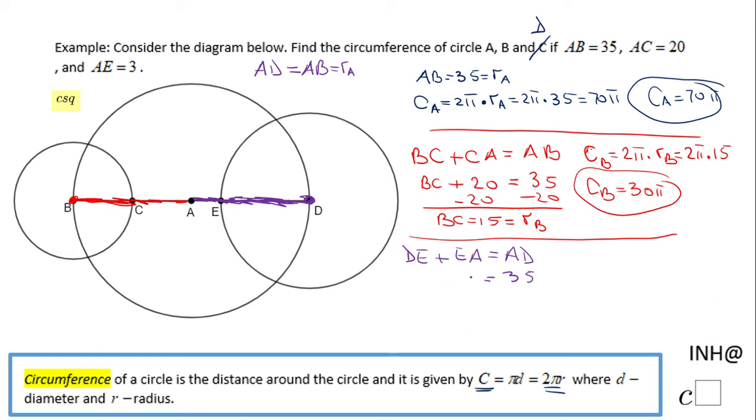If EA is 3, we can find DE just by subtracting 3 from 35, and DE will be 35 minus 3, that is 32.